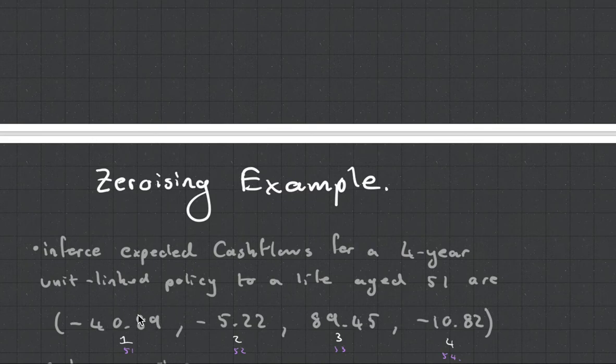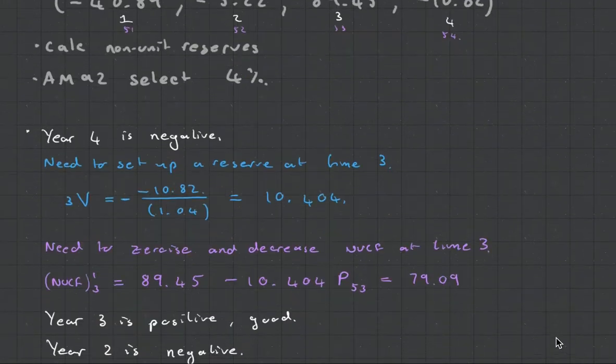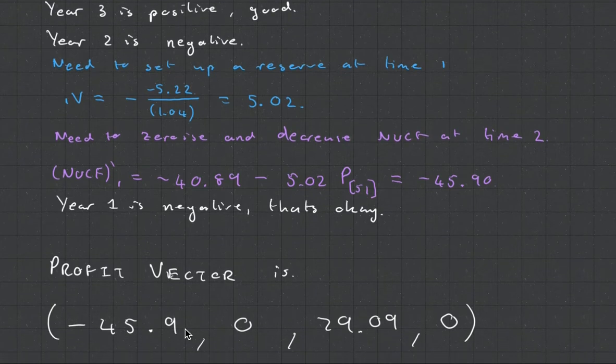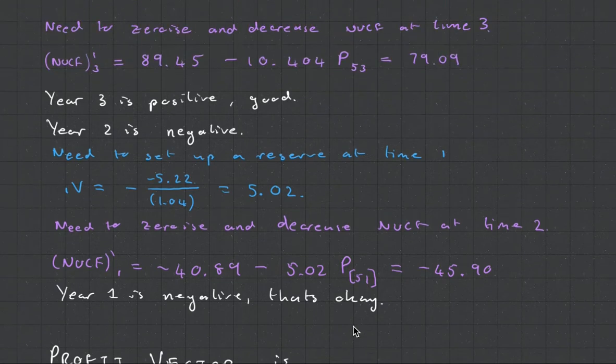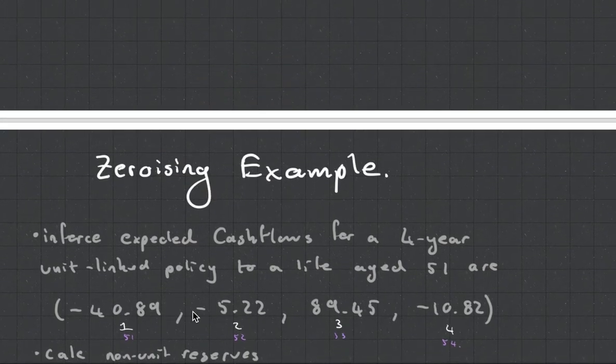We've got this profit vector here, and what we want to do is we want to zeroize it. And how are we going to do that? So that's what we have, and this is what we want to result in. What you can see with this profit vector is that the only negative value that should be appearing is the first one. All these others must either be zeros or positive values. So you can see over here, we had a negative value here and a negative value here.